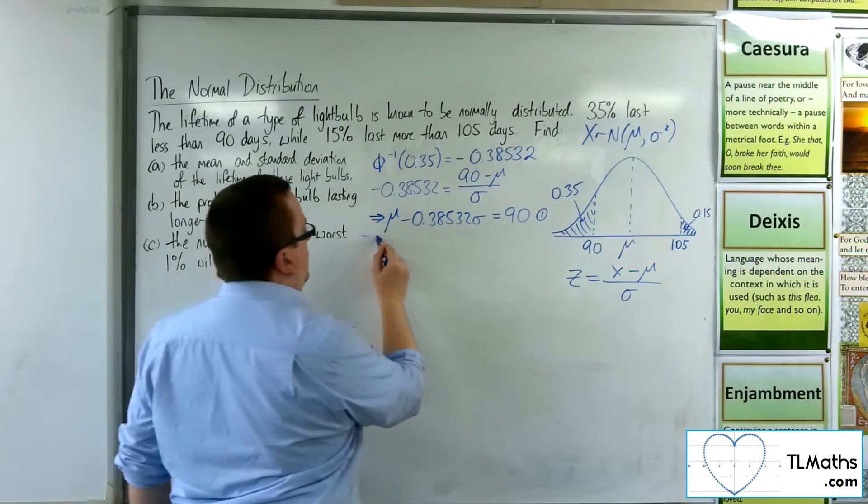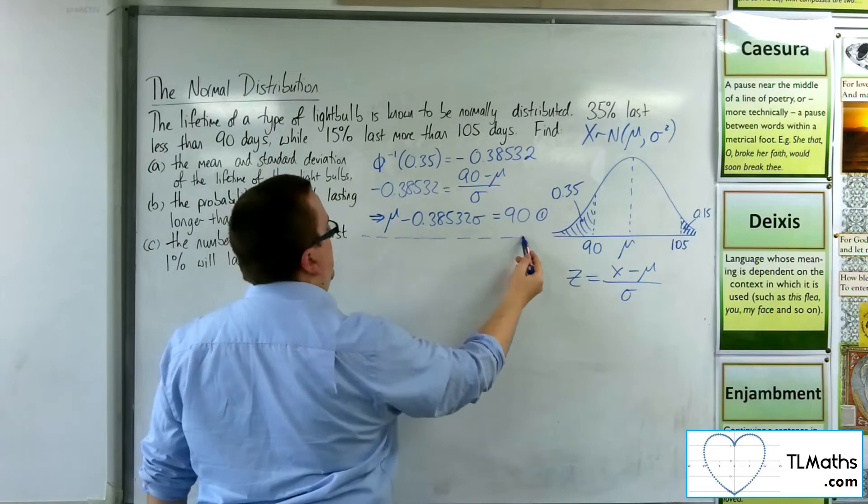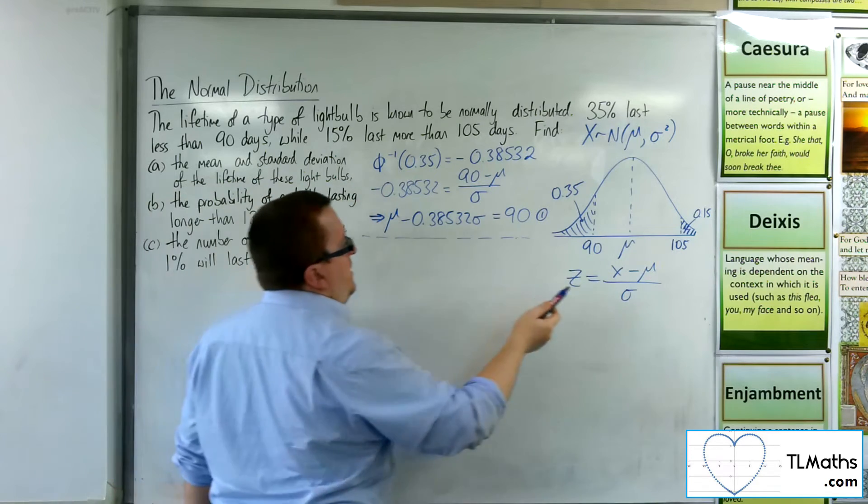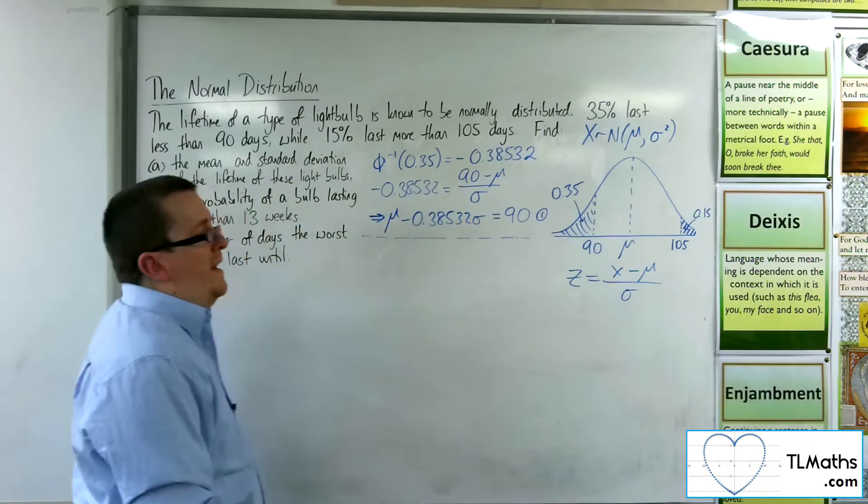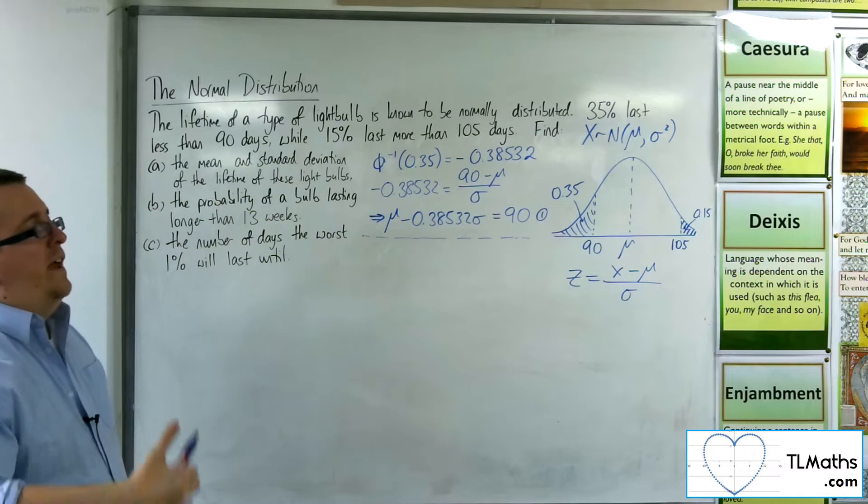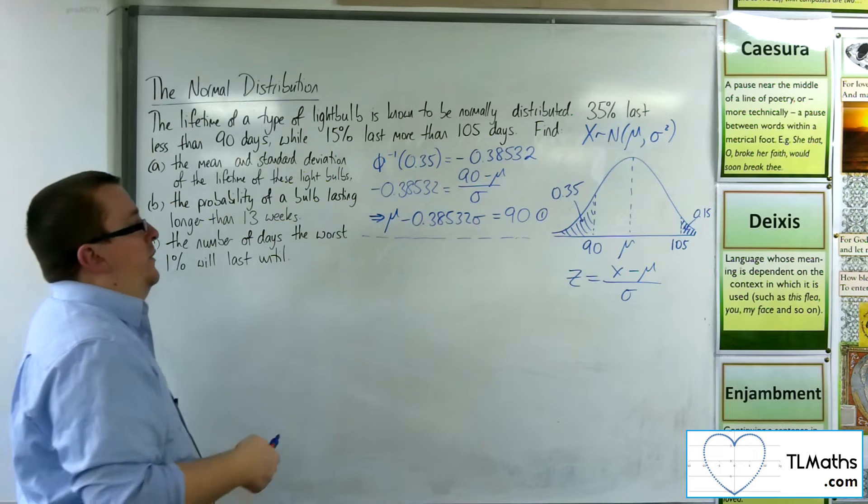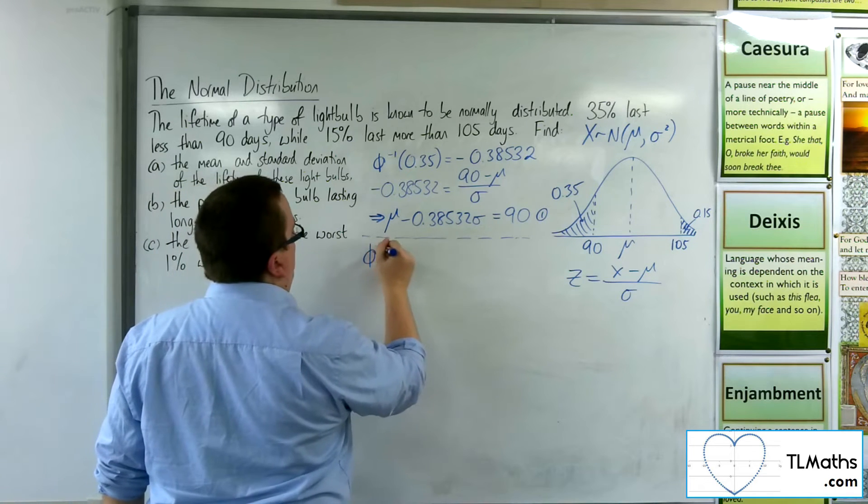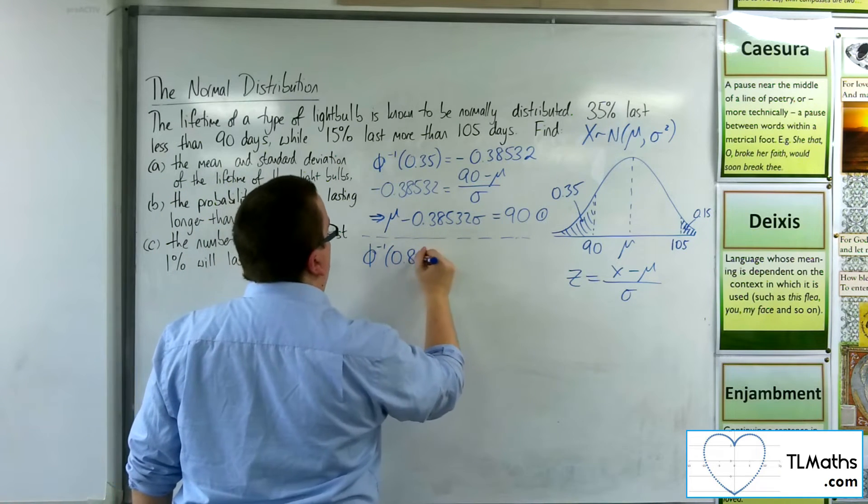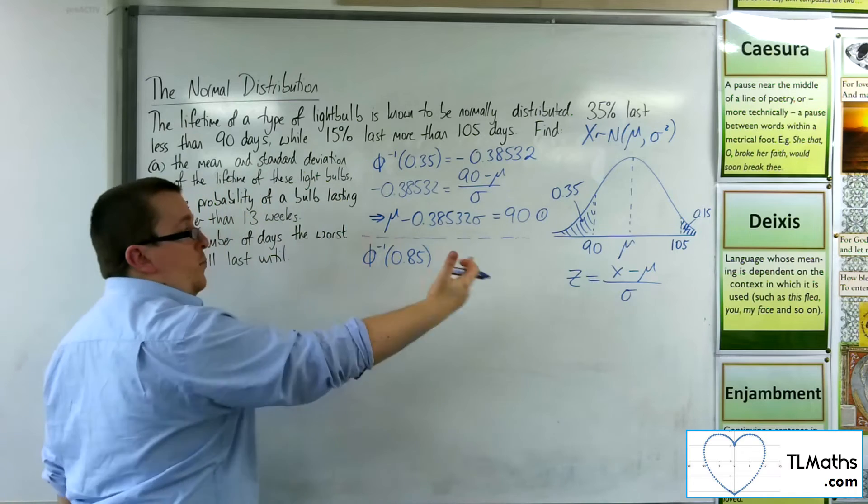So now I need to utilise the second bit of information. Now if I know that 15% is greater than 105, then I also know that 85% has got to be less. So I need to look up the inverse norm of 0.85 because your calculator can only work with areas to the left.